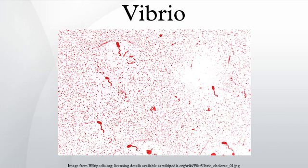Several species of Vibrio are pathogens. Most disease-causing strains are associated with gastroenteritis, but can also infect open wounds and cause septicemia. They can be carried by numerous marine animals, such as crabs or prawns, and have been known to cause fatal infections in humans during exposure.